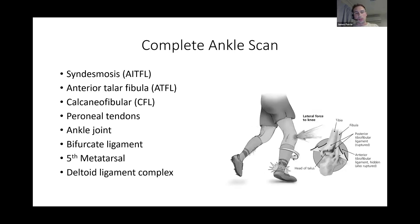By dorsiflexing the ankle you can put the syndesmosis under a little bit of tension, which can be helpful dynamically. I then move on to the ATFL and the calcaneofibular ligament. If I don't find any pathology there, I'll look at the ankle joint for an effusion. Commonly, if you don't find any injury around the ankle, the bifurcate ligament can be involved — it has two components, the calcaneo-cuboid and the calcaneo-navicular — and the patient may have suffered a small avulsion fracture.